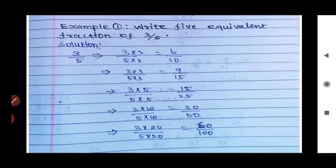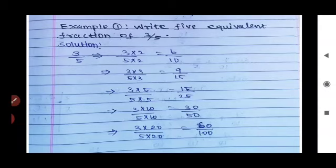Continuing: multiply 3/5 by 3 to get 9/15. Then 3/5 × 5 = 15/25. Then 3/5 × 10 = 30/50. And finally 3/5 × 20 = 60/100. So the five equivalent fractions of 3/5 are: 6/10, 9/15, 15/25, 30/50, and 60/100.